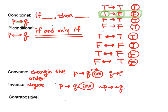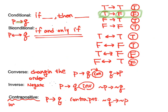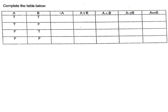Now, contrapositive is in fact a combination of these — the converse and inverse. So if we have P then Q, the contrapositive would be: not Q implies not P. One thing to realize is this: as soon as you see the words 'logically equivalent,' that means you have to think about the contrapositive.